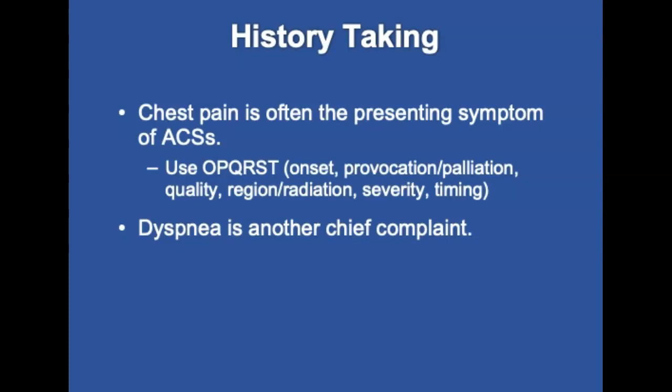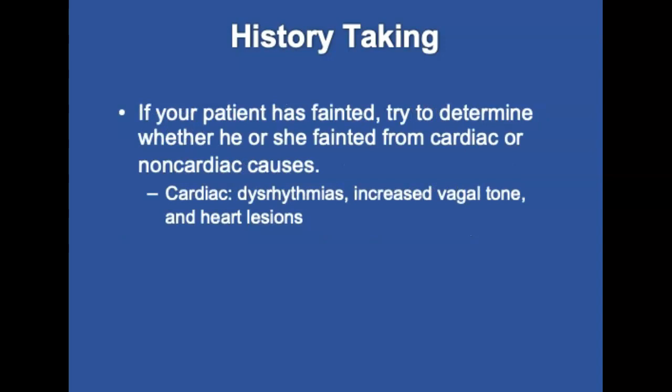If your patient has a cough, find out whether it is dry or productive. If your patient has fainted — a syncopal episode — try to determine whether the patient fainted from cardiac or non-cardiac causes. Cardiac causes of syncope include dysrhythmias, increased vagal tone, and heart lesions. Consider a cardiac cause if fainting occurs in a recumbent position, is provoked by exercise, is associated with chest pain, or if a family history of fainting or sudden death is present.